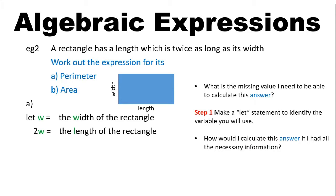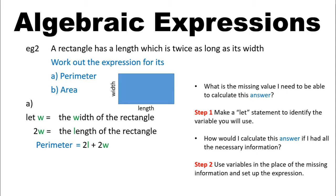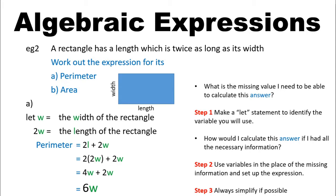Next, how would I calculate our answer if I had all the necessary information? If I knew what the length and width were, I would work out the perimeter by adding up all of the lengths and all of the widths. So I would say the perimeter is equal to two lengths plus two widths. Knowing that the length is twice the width, I can replace that using the variables I've defined and say that length is 2W. So I would write: perimeter equals two times 2W plus the two widths. Simplifying: two times 2W would be 4W, so altogether the perimeter is 6W.